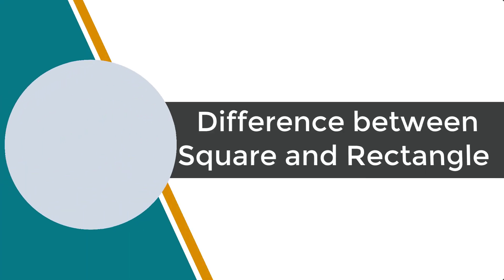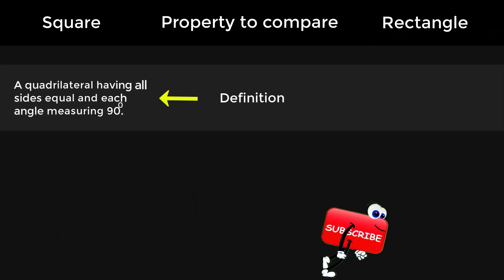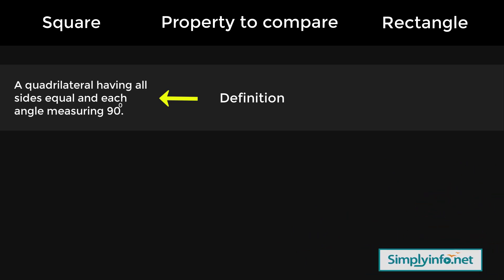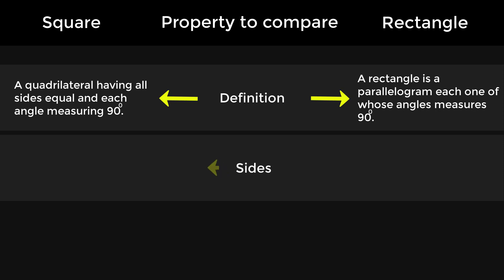Difference between square and rectangle. Definition of square: a quadrilateral having all sides equal and each angle measuring 90 degrees. Definition of rectangle: a parallelogram each one of whose angles measures 90 degrees.